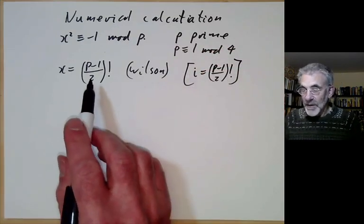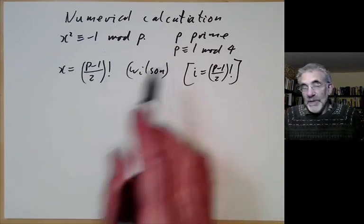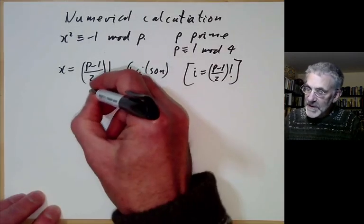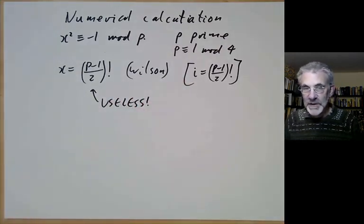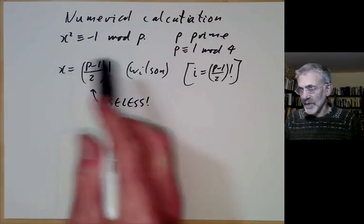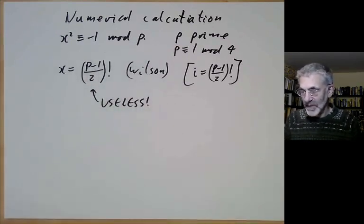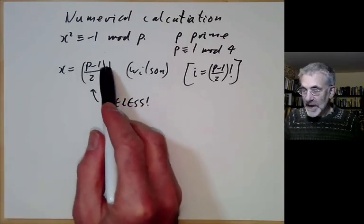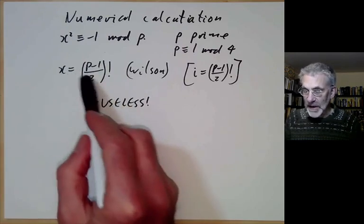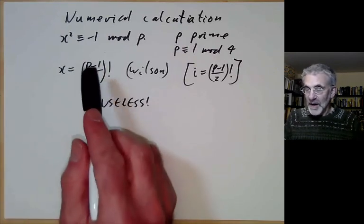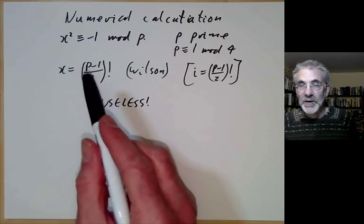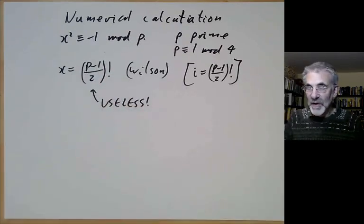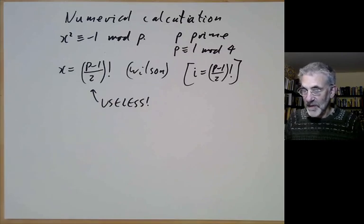You might think we've solved the problem, but the trouble is this formula is almost useless. If p is large, this takes a lot of effort to calculate directly. If p is a billion, we'd have to do a billion different multiplications — obviously far too slow for large p. So we want a faster method.